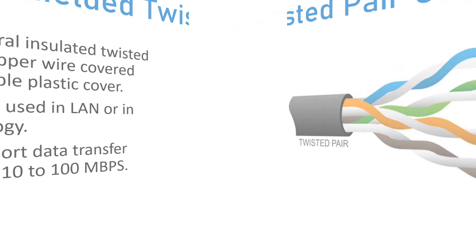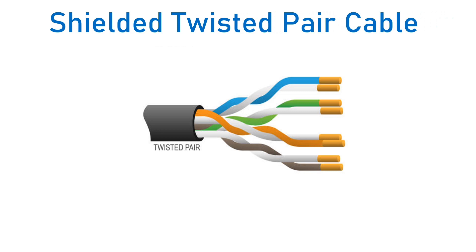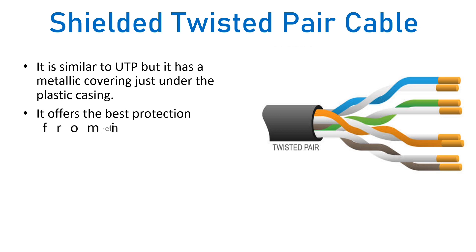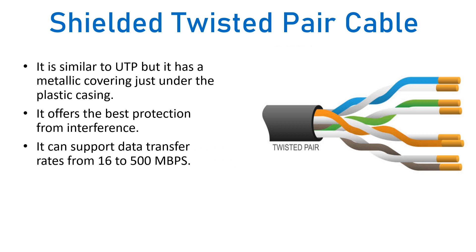Shielded twisted pair (STP) cable is similar to UTP, however it has a metallic covering just under the plastic casing — one extra layer of protection. It offers the best protection from electromagnetic interference because of that extra metallic covering. STP can support a data transfer rate from 16 to 500 Mbps, giving it even more bandwidth compared to UTP.